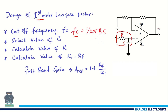In some problems, the capacitor value may not be given, so we need to assume a value of C and calculate R for the given cutoff frequency. We also need to calculate R1 and Rf — the two resistors associated with the amplifier. This is a non-inverting op-amp, which has a feedback resistor Rf and input resistor R1.